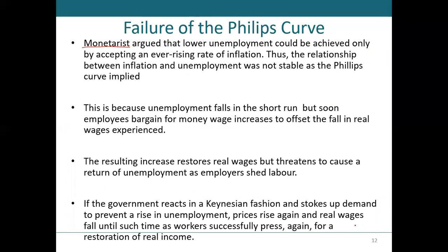The monetarist economists said that the Phillips curve actually occurs in the short run. But in the long run, when labor unions realize that their real wage has decreased, they are going to bargain for increasing wages by embarking on industrial actions such as lock-ins, lock-outs, strikes, and sit-downs. So in the long run, labor unions are going to bargain for increasing wages.